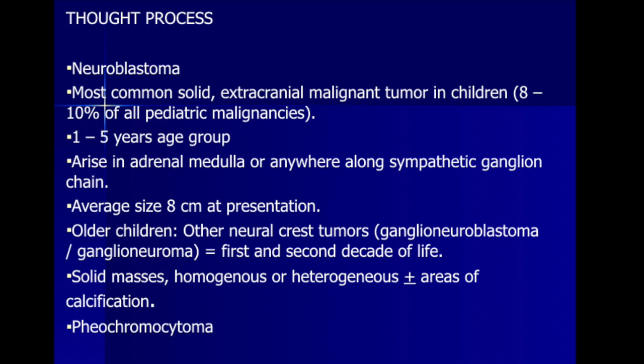When you get a pediatric case with a mass related to the kidney, the first thought is neuroblastoma. Neuroblastoma is the most common solid extracranial malignant tumor in children, forming about 8 to 10 percent of all pediatric malignancies, and is most common in the one-to-five-years age group. Neuroblastomas arise either in the adrenal medulla or anywhere along the sympathetic ganglion chain, with an average size of about eight centimeters. In older children, other neural crest tumors such as ganglioneuroblastoma and ganglioneuroma are more common, occurring in the first and second decades of life, presenting as solid masses — homogeneous or heterogeneous, with or without calcification.